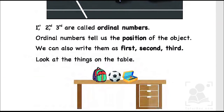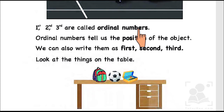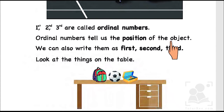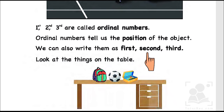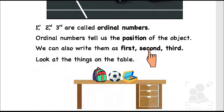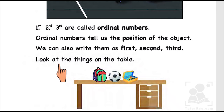First, second, third are called ordinal numbers. Ordinal numbers tell us the position of the object. We can also write them in words format — first, second, third. Let's look at the things on the table.